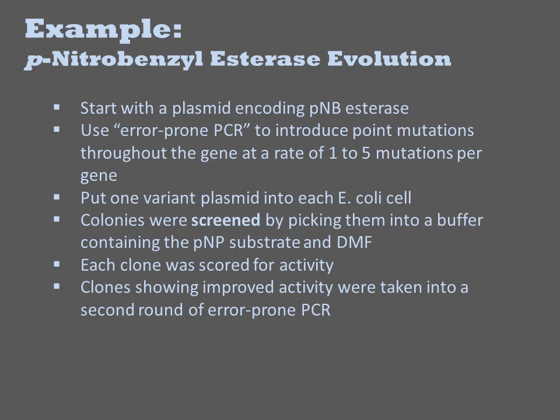They then subclone the PCR products back into the plasmid and transform cells to make their library. They pick many individual colonies and then screen each one by placing the cells in a buffer containing the paranitrophenol acetate substrate and DMF. They then quantify the yellow absorbance of each sample to get a score for the fitness of each variant.